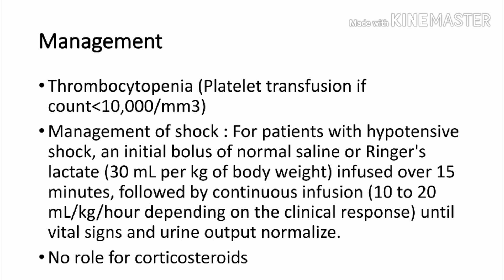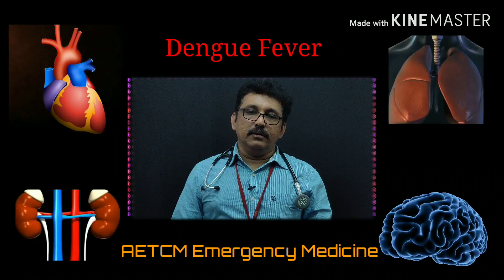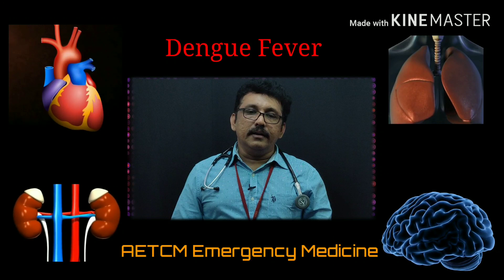Shock should be treated with normal saline. Any shock, including dengue hemorrhagic shock, should initially be treated with normal saline or Ringer's lactate at 30 ml per kg body weight over 15 minutes, followed by an infusion of 10 to 20 ml per kg depending on clinical response. Urine output is the best monitoring parameter during fluid resuscitation. There is no role for corticosteroids in any phase of dengue fever illness.